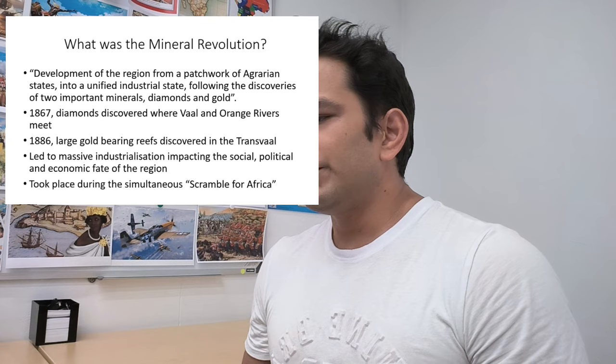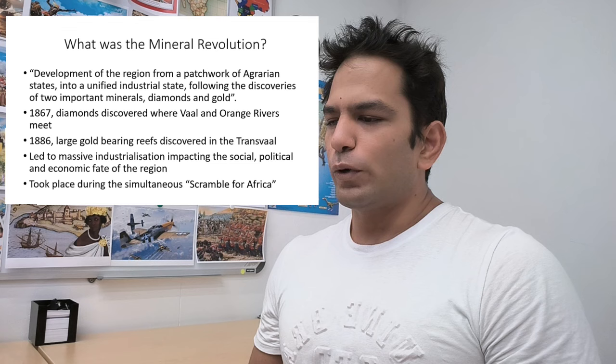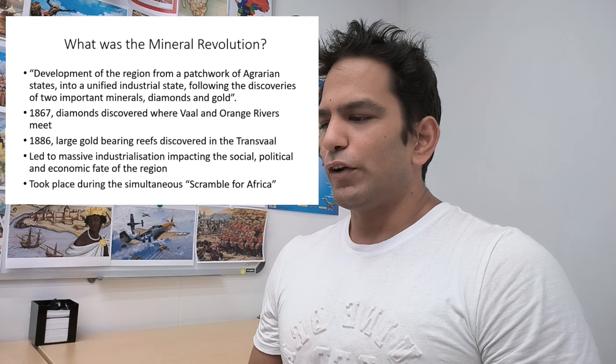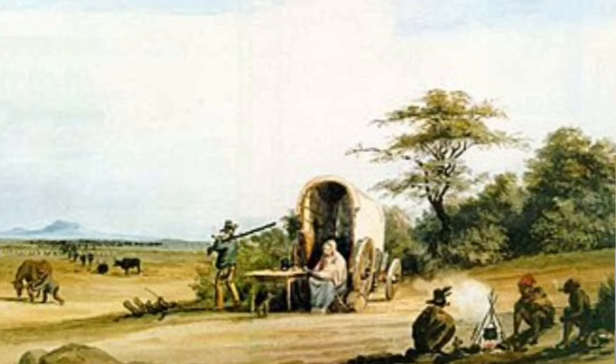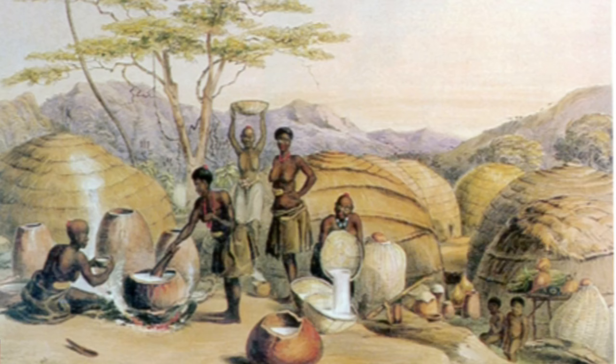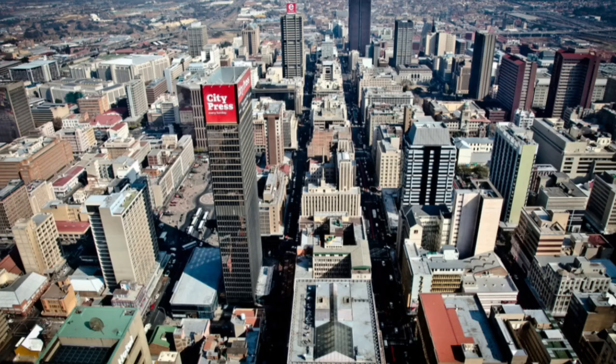A commonly used definition of the Mineral Revolution is the development of the region from a patchwork of agrarian states into a unified industrial state following the discovery of two important minerals: diamonds and gold. This describes the transformation of Southern Africa from a collection of agricultural subsistence farming states into one unified industrial state as a consequence of two very valuable minerals.